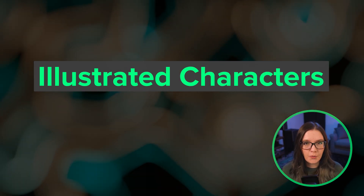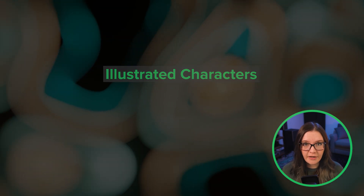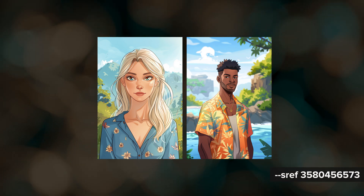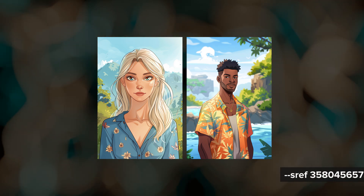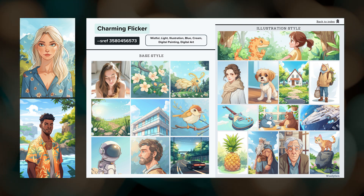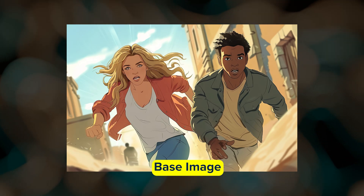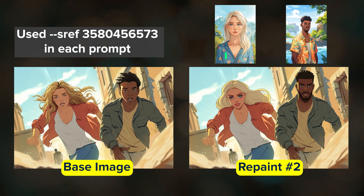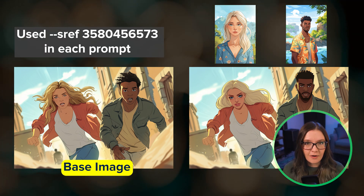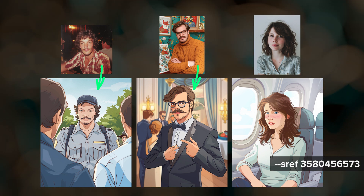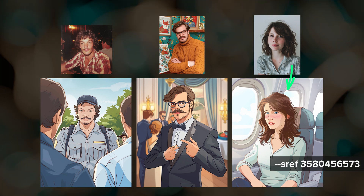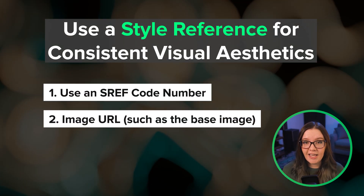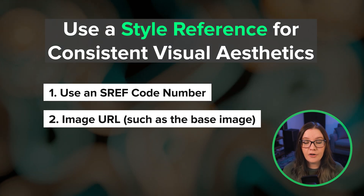You can also use these approaches if you're working with illustrated characters or even some non-human characters, although non-human characters can be a little more difficult to use as references. Here I created two different characters using an illustration style reference code for both images — this is the charming flicker sref code for my illustration sref guide. Next I created the base image using the same style reference code and then repainted over the faces to bring in each character reference one at a time. When you're working with multiple reference characters, using either an sref code or the original base image as the style reference can be a useful tool for keeping style consistency across different iterations.